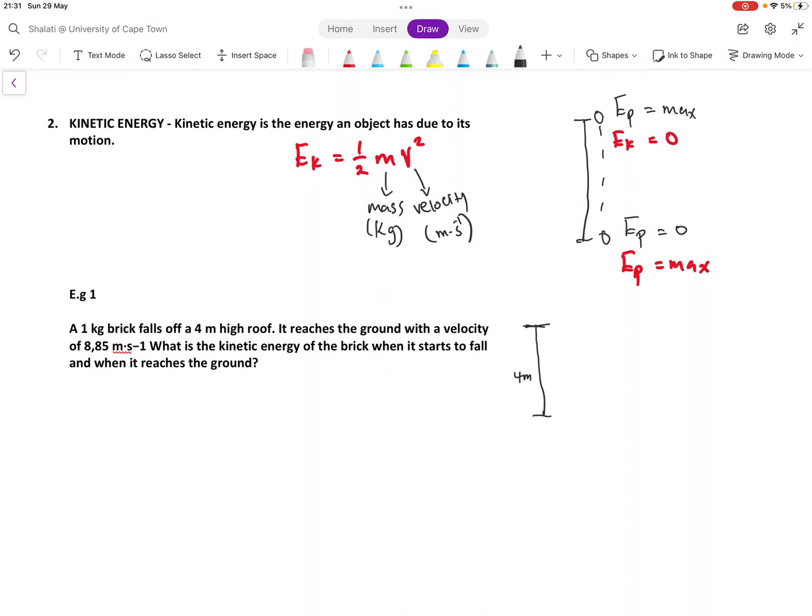When it starts to fall, it starts to fall here at the top, what is given for us at the top, we're given a height of 4 meters, we're given mass, which is 1 kilograms, we're given velocity, which is 8.85 meters per second. I'm just writing out everything that's given. And then, let's try to calculate the kinetic energy. So I'm going to say at the top, I know the formula for kinetic energy is EK equals to half M V squared. Hold on, I made a mistake here about the velocity at the top.